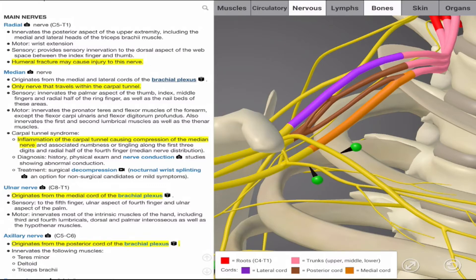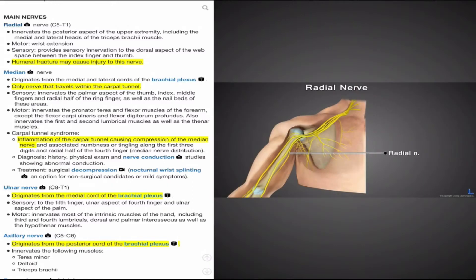It is responsible for innervation of the posterior aspect of the upper extremity, including the medial and lateral heads of the tricep brachial muscle. The radial nerve holds both sensory and motor functions. Its sensory functions involve providing sensory information to the dorsal aspect of the hand, including the web spaces between the fingers and the thumbs. Motor function of the radial nerve includes wrist extension. Patients with damage to the radial nerve, a common complication of humerus fractures, may classically present with wrist drop or an inability to properly extend their hand at the wrist.